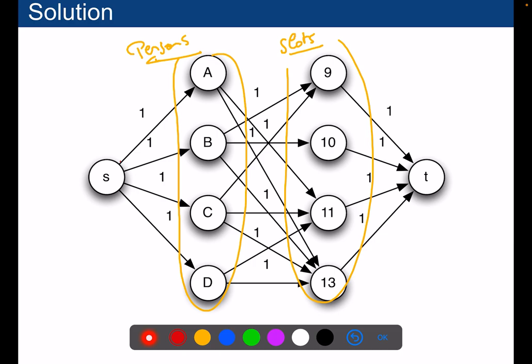And we will put here from the sink, we will put an arc that will link every person because every person needs to be scheduled. And we will add an edge for every person to the slots where the person is available, like this one.